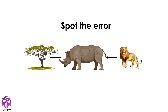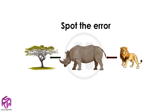Can you spot the error in this food chain? Pause the video now if you need time to look carefully. That's right — the arrows were pointing in the wrong direction. The arrows should always be pointing in the direction of energy transfer, not pointing from an animal to the organism that it wants to eat.